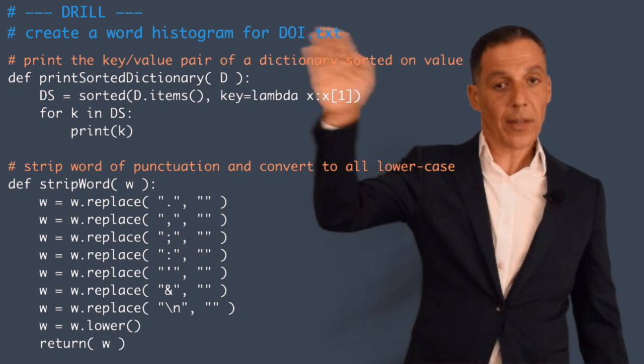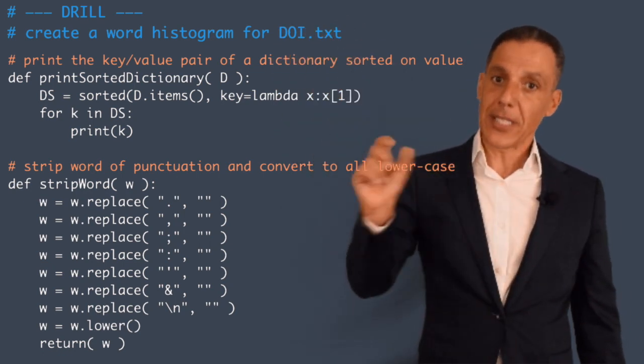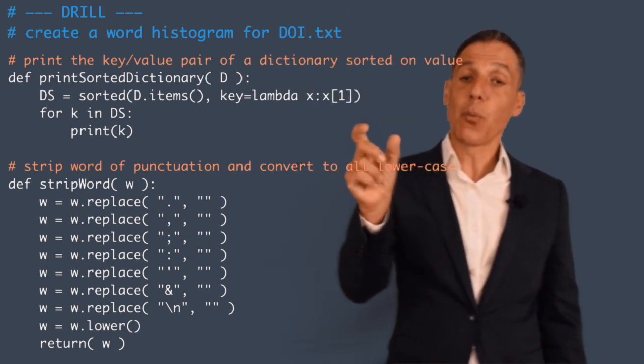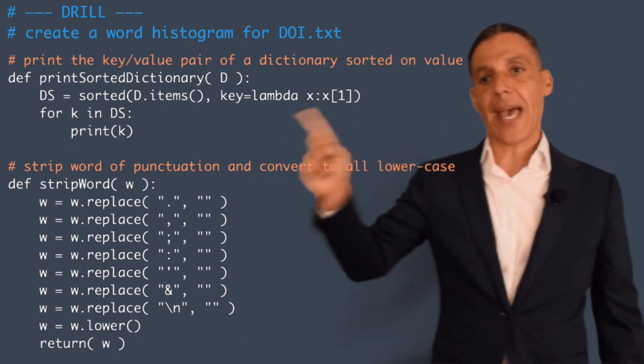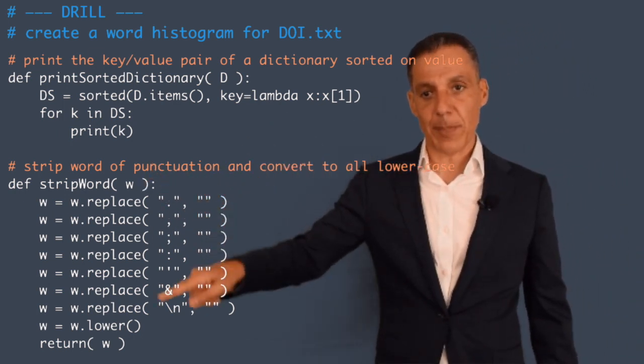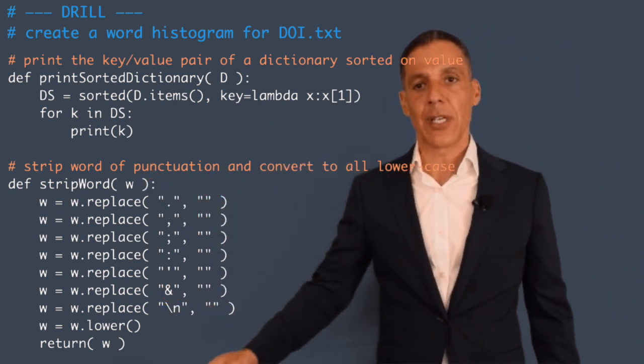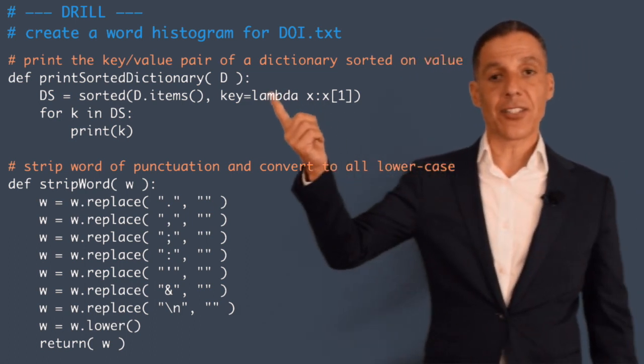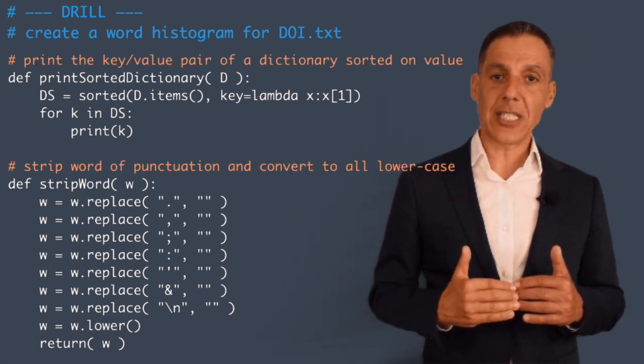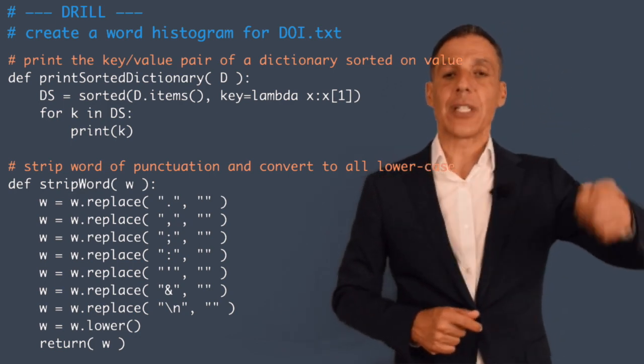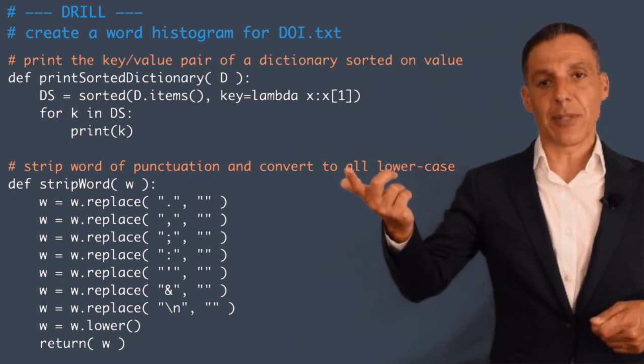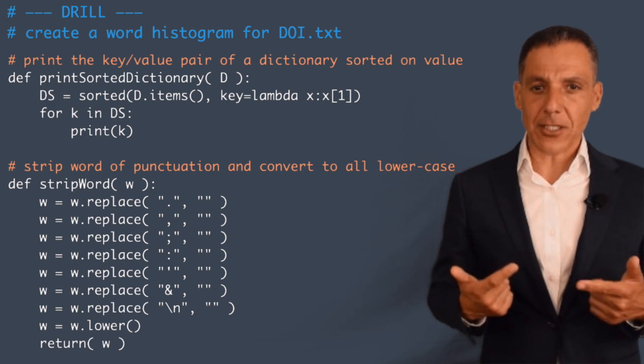So what you're going to do is you're going to parse this file one line at a time. For each line, you're going to parse it one word at a time. You're going to pass that word to this function to strip out punctuation and convert to lower, and then you're going to add it into the dictionary if it's a new word not previously seen, or increment the count if the word was seen before.